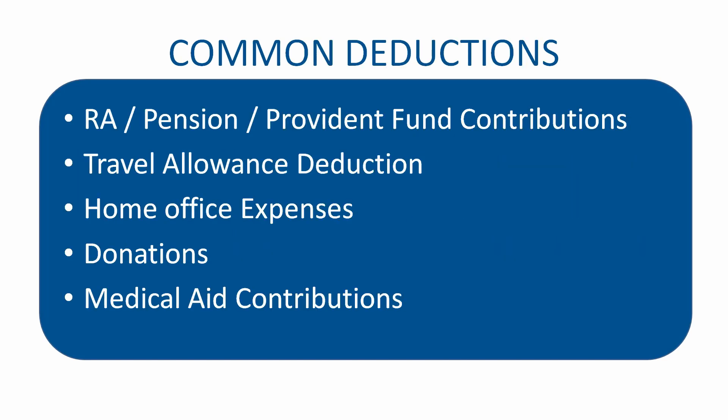The common deductions available to employees are retirement annuity, pension fund, and provident fund contributions. If you receive a travel allowance you can get a travel allowance deduction. If you work from home you can deduct your home office expenses to a certain extent. If you donate to section 18A registered organizations you can get a deduction, and finally you can get medical aid tax credits for medical aid contributions you make yourself or for another person.